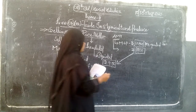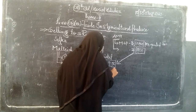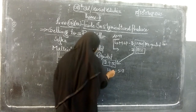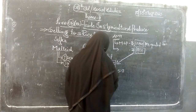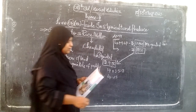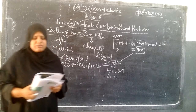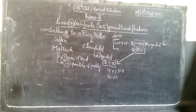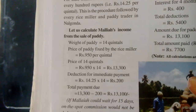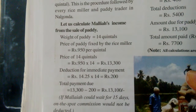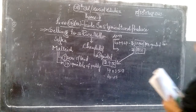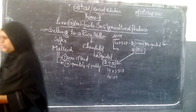Now let us calculate Malaya's income from the sale of paddy. Malaya has 14 quintals of paddy. The price fixed by rice miller Chandula is Rs. 950 per quintal. So for 14 quintals, the price is 14 × Rs. 950 = Rs. 13,300. This is the actual amount he should receive. But since Malaya wants immediate payment, there will be a deduction.